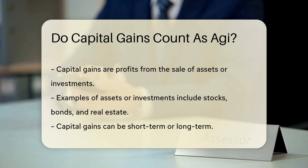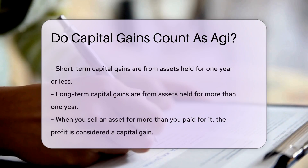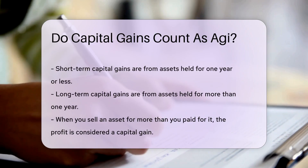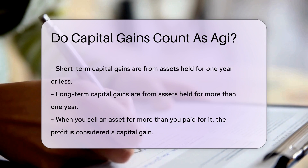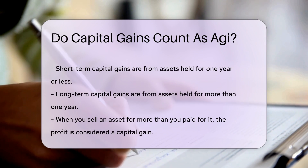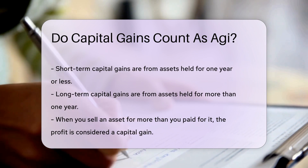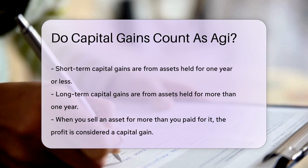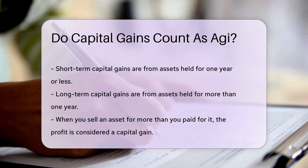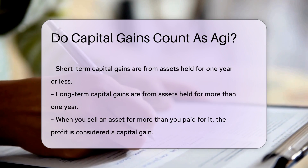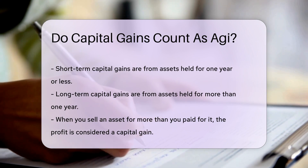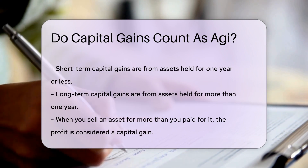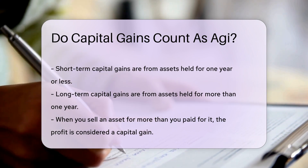Short-term capital gains are from assets held for one year or less, while long-term capital gains are from assets held for more than one year. When you sell an asset for more than you paid for it, the profit is considered a capital gain. This gain is included in your gross income, which is the starting point for calculating AGI.